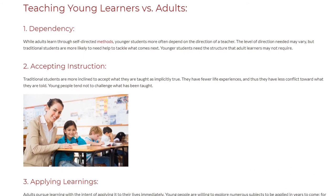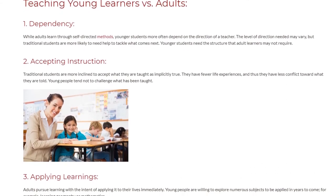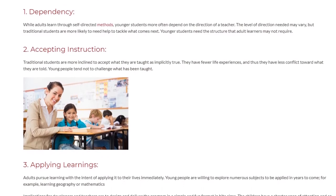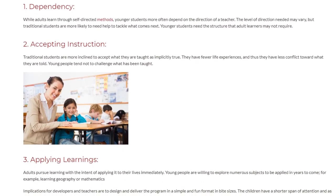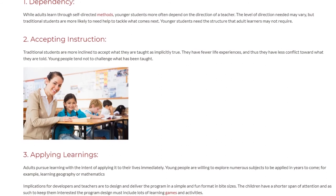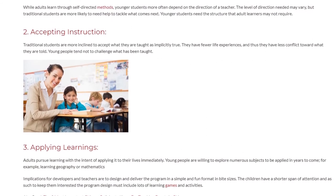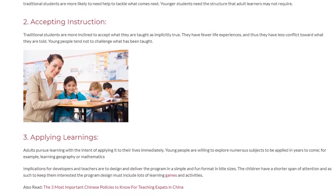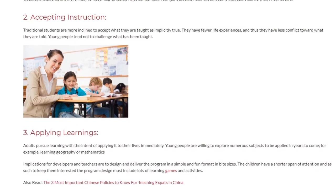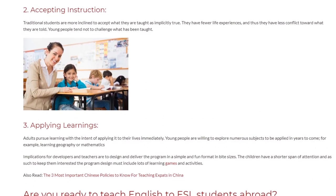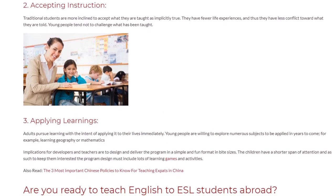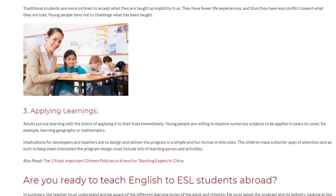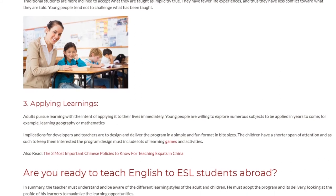The third difference is applying learnings. Adults pursue learning with the intent of applying it to their lives immediately. Young people are willing to explore numerous subjects to be applied in years to come — for example, learning geography or mathematics. The implication for developers and teachers is to design and deliver programs in a simple and fun format in bite sizes. Children have a shorter attention span, so program design must include lots of learning games and activities.